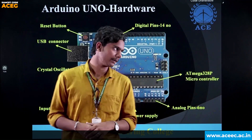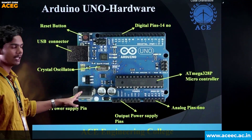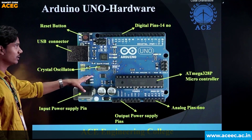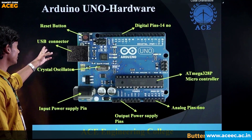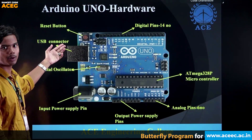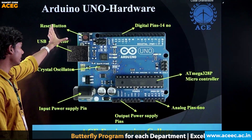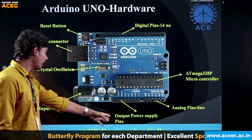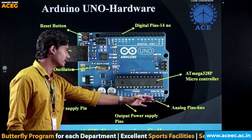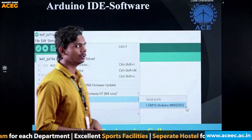Other components on the Arduino Uno board include the input power supply pin, a crystal oscillator, a USB connector which connects to a computer or laptop, a reset button, output power supply pins, and analog pins.